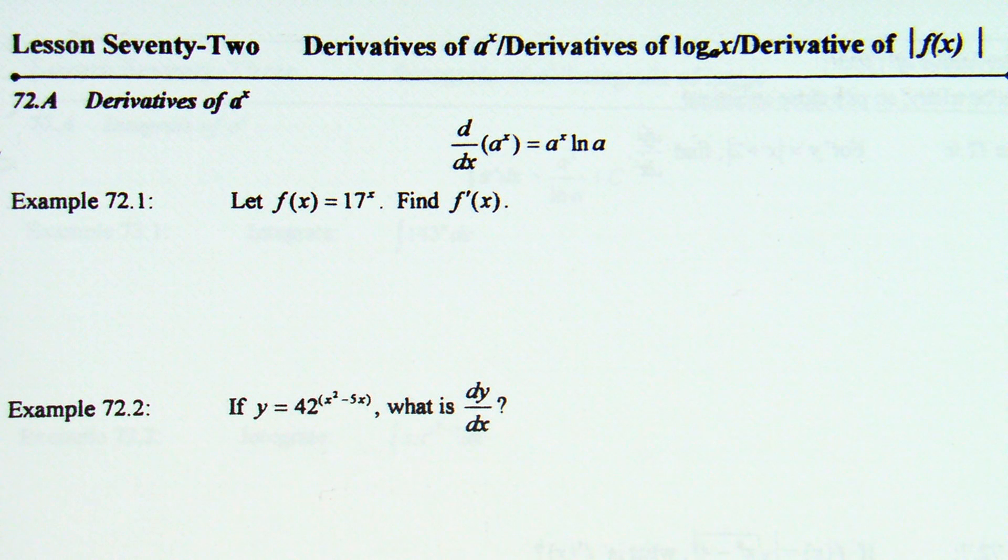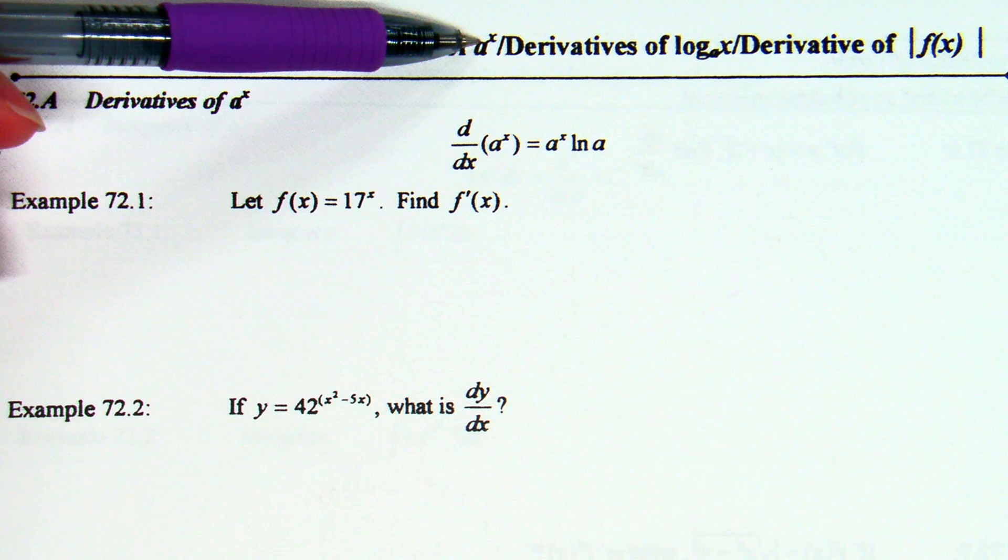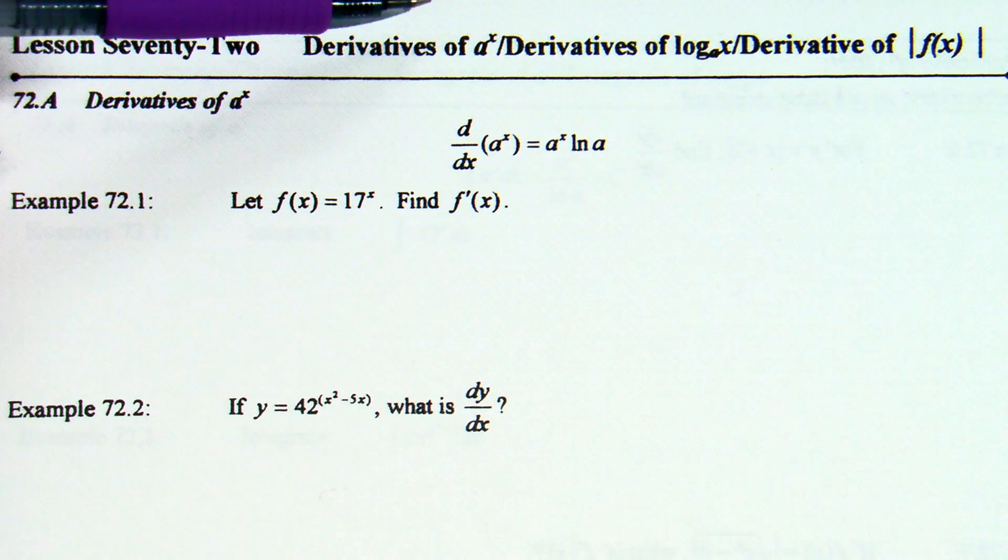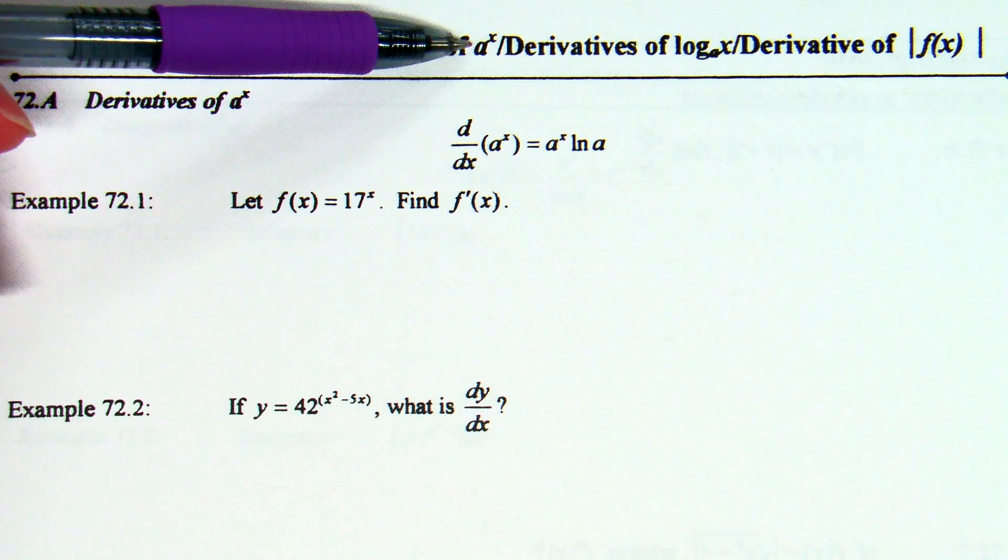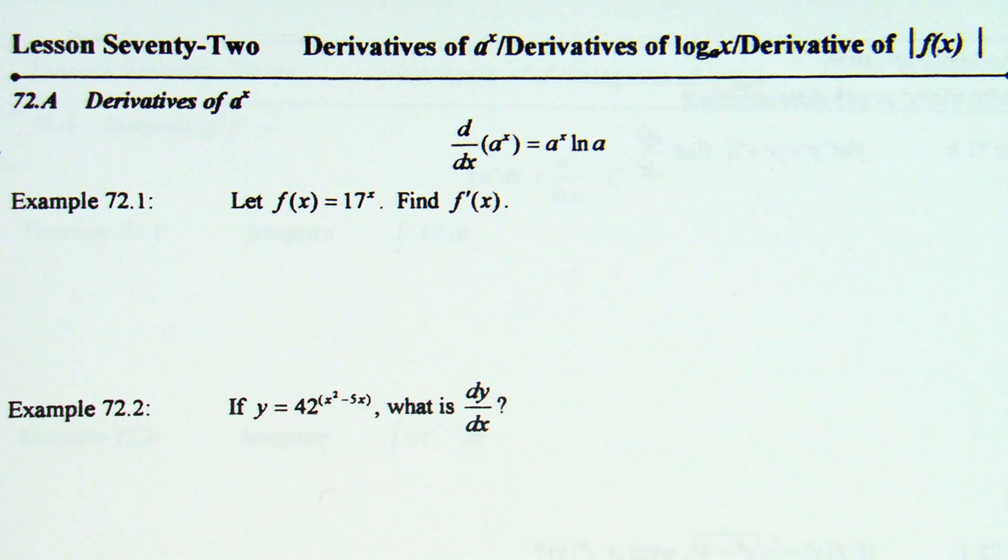So, we have derivatives of three different things today. We have a to the x. So, in other words, when x is in the power, it's not just bring the power down out front and subtract one from the power. It's different when your variable's in the power. Derivatives of logs and derivatives when there's absolute value are the three things we're looking at. So, the absolute value is going to take a little processing but the first two are more just learn and know the rules.